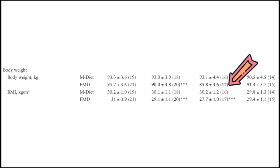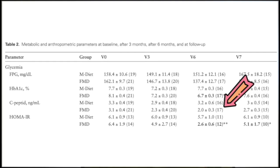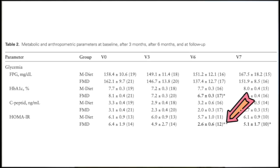Body weight dropped more than 20 pounds in the fasting-mimicking diet group, compared to no weight loss in the Mediterranean group. These were highly impressive results from fasting and mimicking that. C-peptide, which measures how much insulin is being produced in the body, was significantly reduced — meaning much less hyperinsulinemia. Looking at HOMA, a marker of insulin resistance, the fasting-mimicking group went from 6.4 to 2.6 — almost double or triple the benefit compared to the Mediterranean diet, which went from 6.1 to 5.7 with really no meaningful benefit.